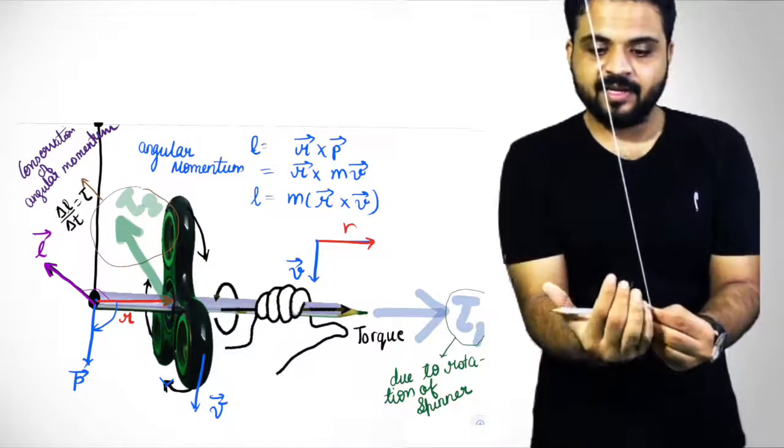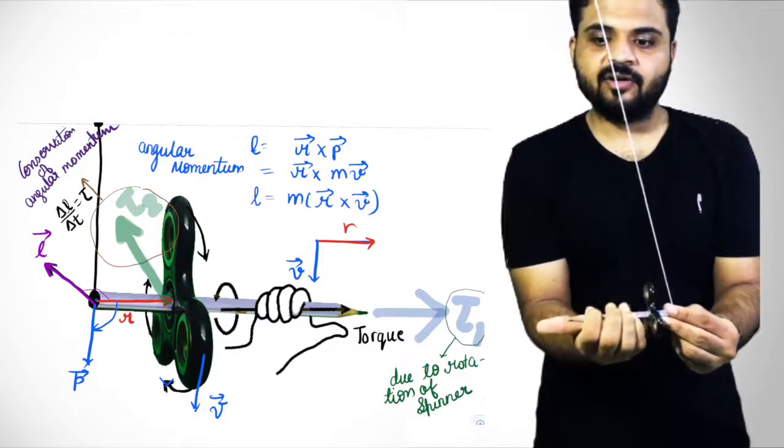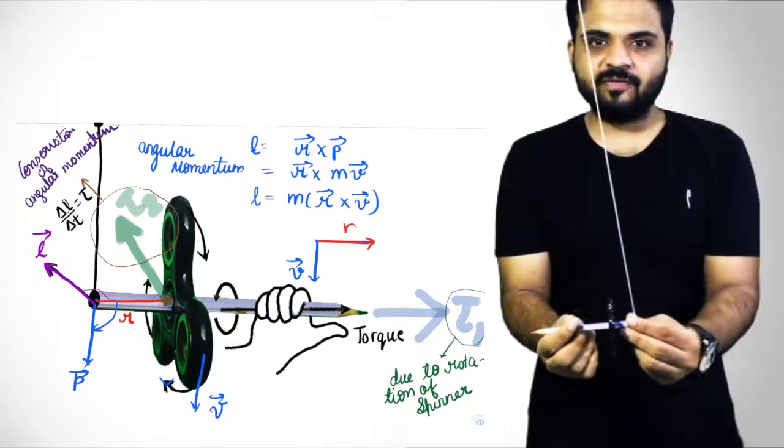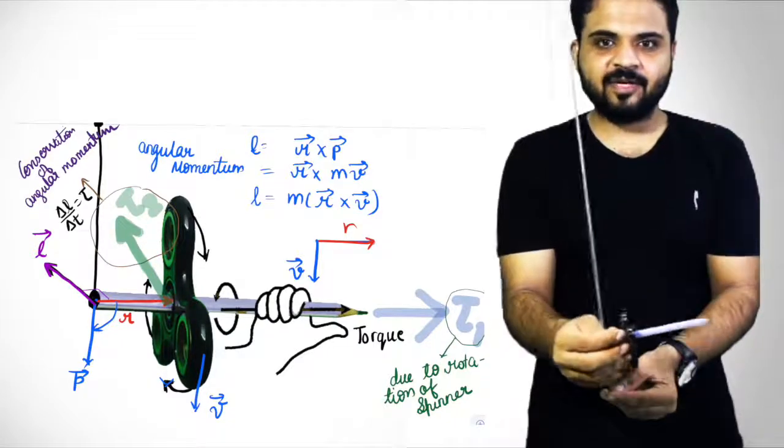If rotation is in this direction, the curl of the fingers, then your thumb will point out the direction of force. That is the torque, the torque in this direction.